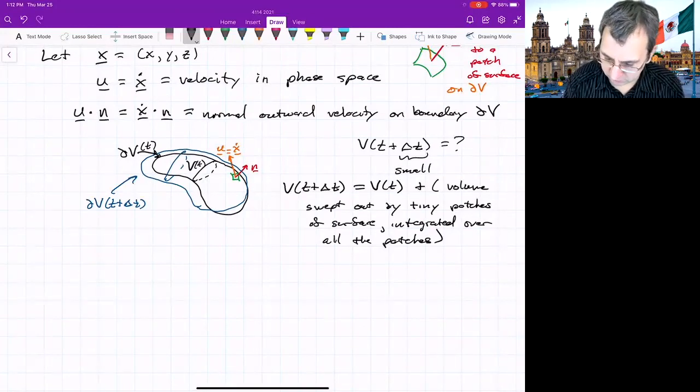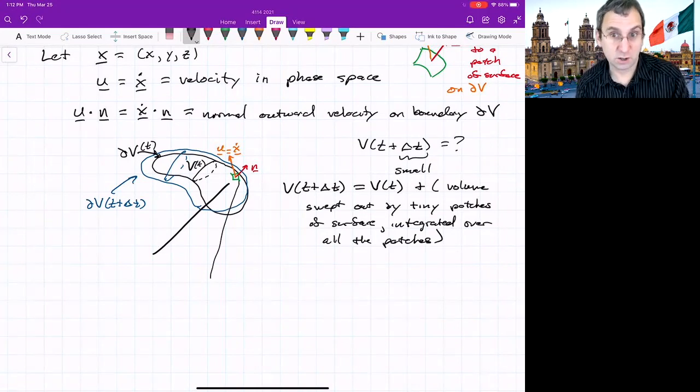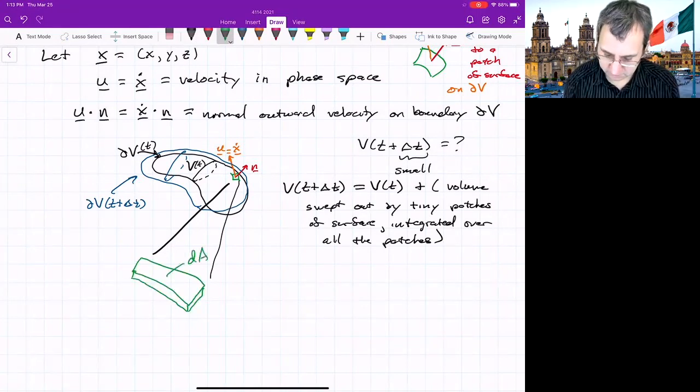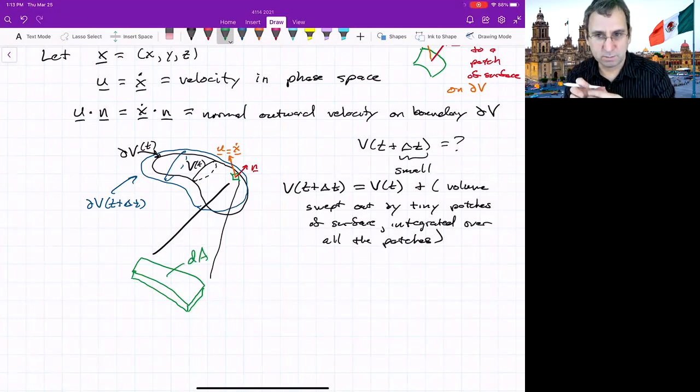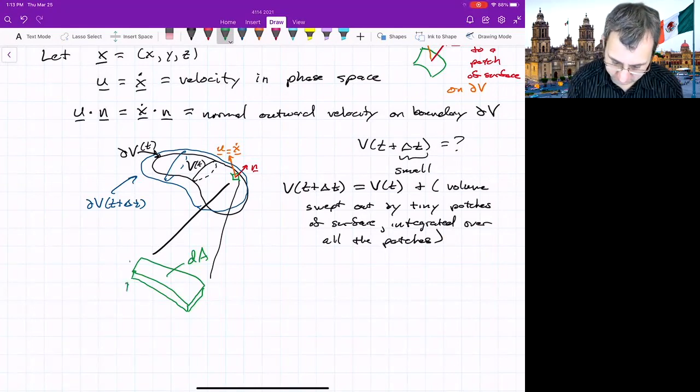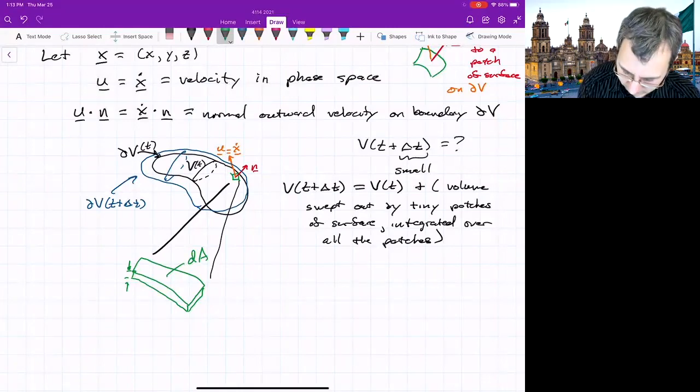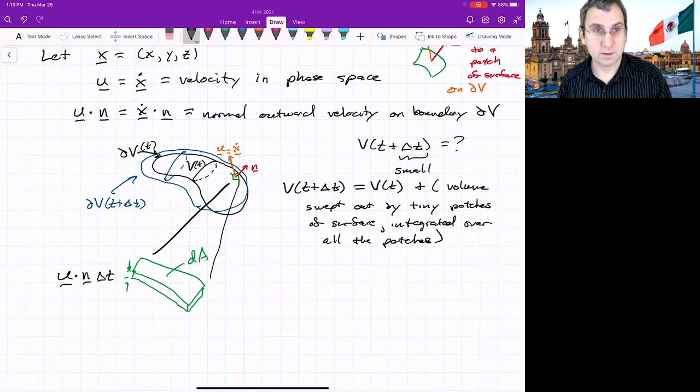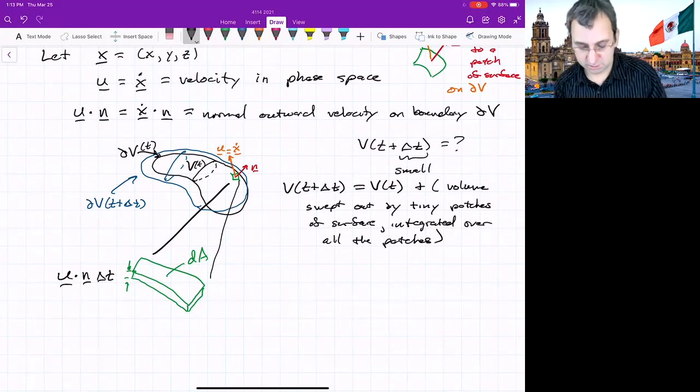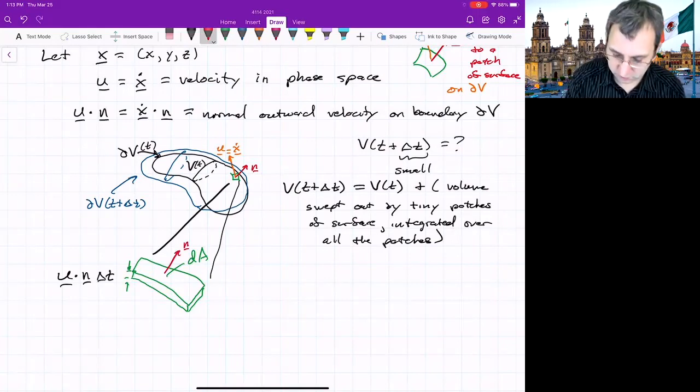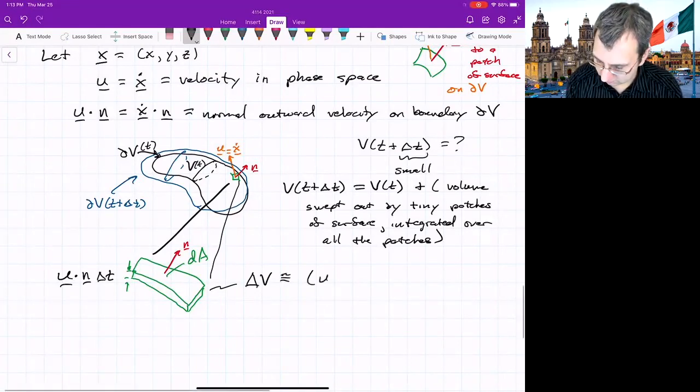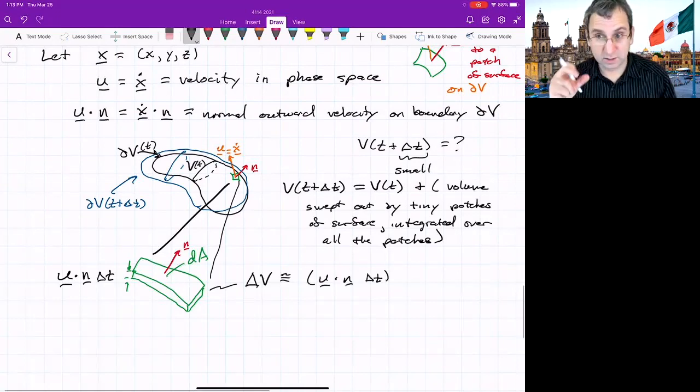So if we were to focus on what is that patch, and we're just sort of zooming in on that little patch, and we'll have a little piece of the surface. This has an area, a small differentiable area that we'll be integrating over later, dA. And what's that thickness, so the change? This is u dotted with n times delta t, right? That will be the volume of the tiny patch.